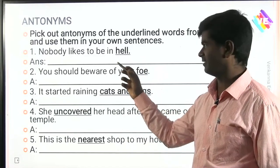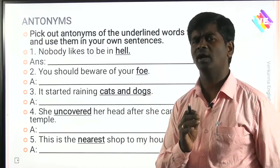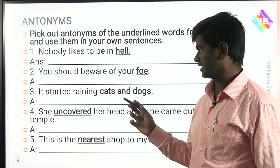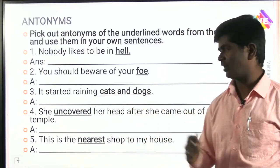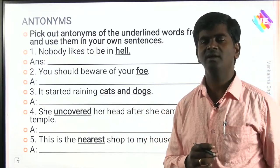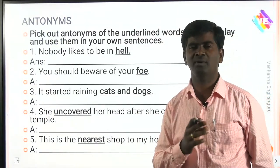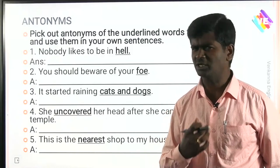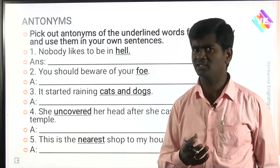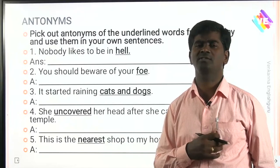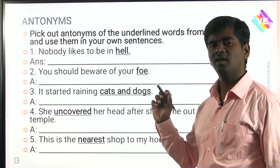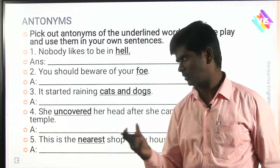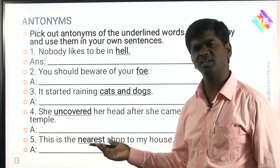Heaven and hell are opposites. Foe means enemy; its opposite is friend or companion. 'It started raining cats and dogs' — the idiom 'cats and dogs' means heavily. It rained heavily in Hyderabad last night. The opposite of heavily is lightly. 'She uncovered her head' — the opposite of uncovered is covered. 'This is the nearest shop to my house' — the opposite of nearest is farthest.